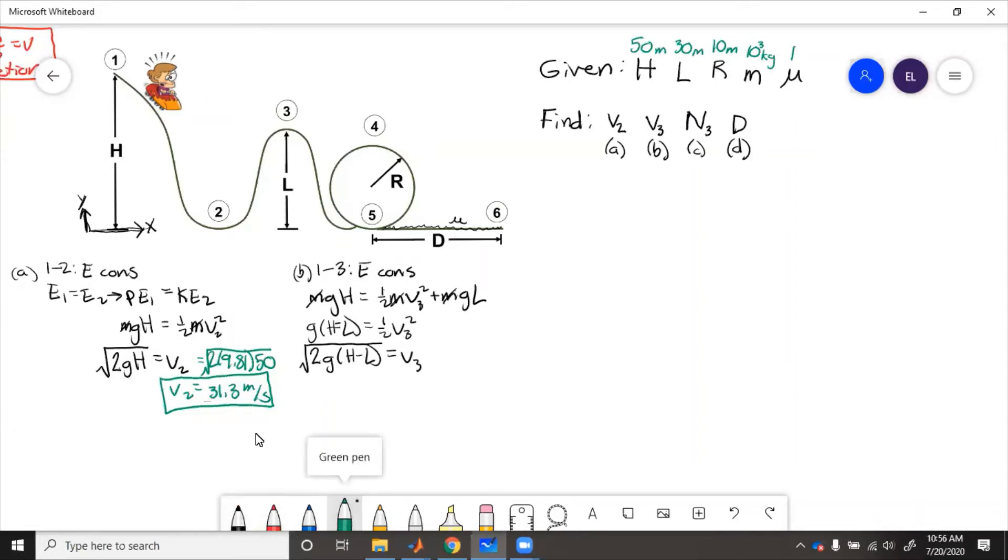If we put numbers into there, 2 times 9.81 times 20 square rooted equals 19.8 meters per second.